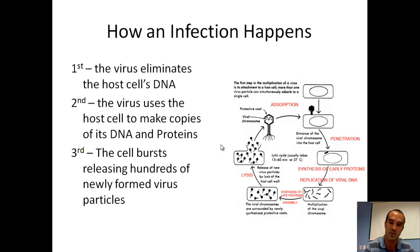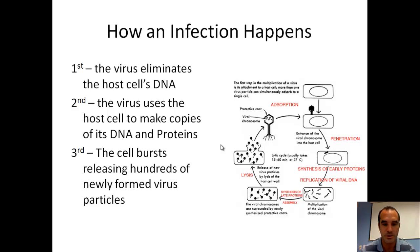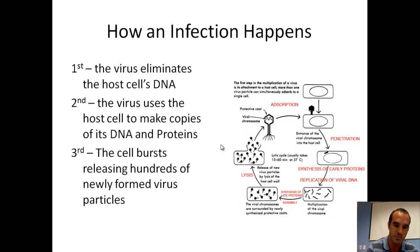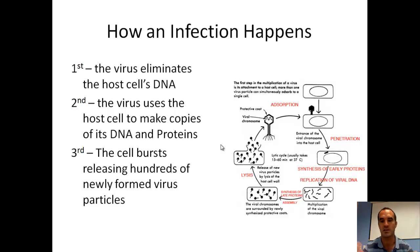Viruses can take over bacteria and eukaryotic cells as well. The second thing it's going to do is use the host cell to make copies of its DNA and to make proteins. It's going to take over the ribosomes and the machinery of the cell and use it like a factory to build viruses. The third step is once the viruses are assembled, the cell bursts and releases hundreds of newly formed virus particles. If it's inside your body, those viruses can go take over new cells, or if taking over bacteria, attach to new bacteria.